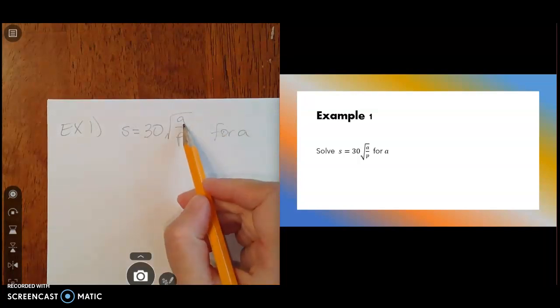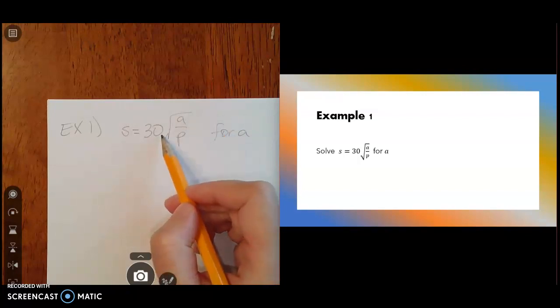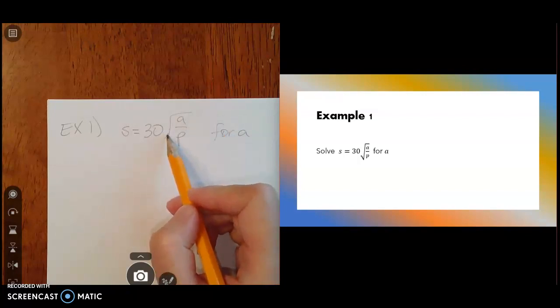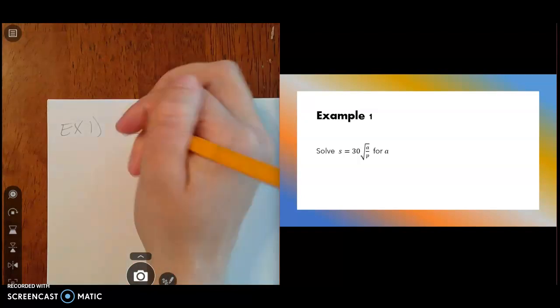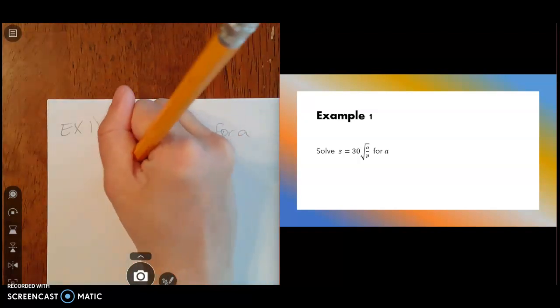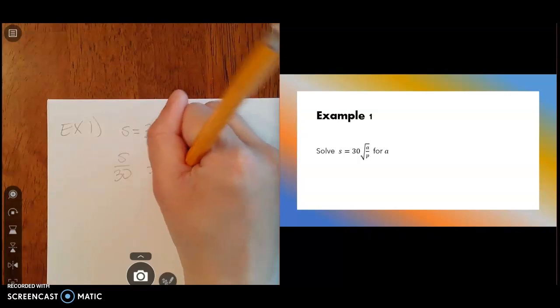So A is right here. It's underneath that square root. So thinking about when I solve square roots, well, I should probably get the radical by itself first. So let's divide both sides by 30. So now I've got S over 30 equals the square root of A over P.